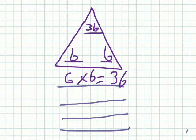And this will only have 1 multiplication and 1 division. So, 36 divided by 6 equals 6.